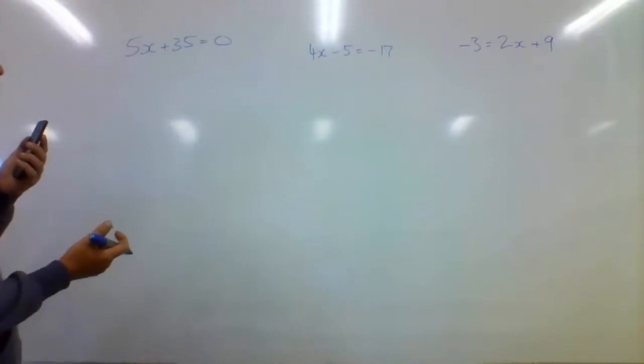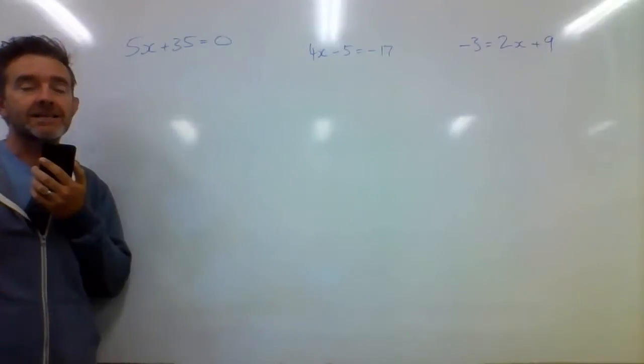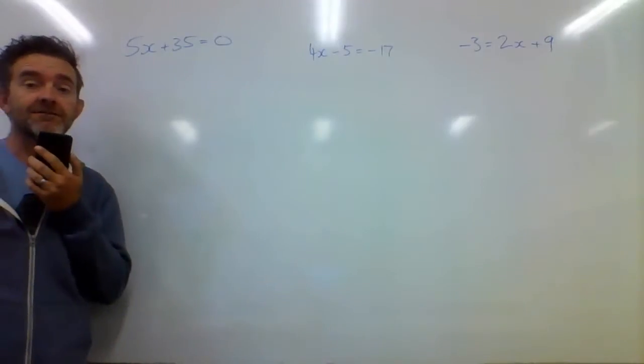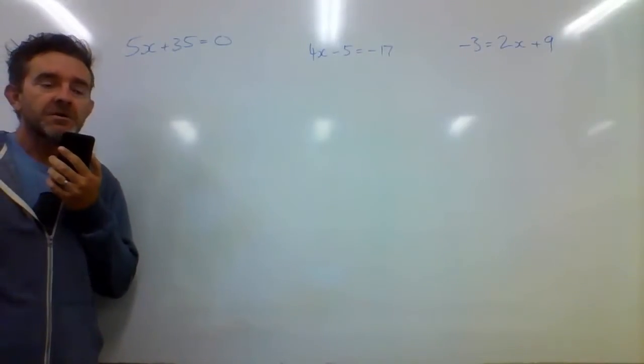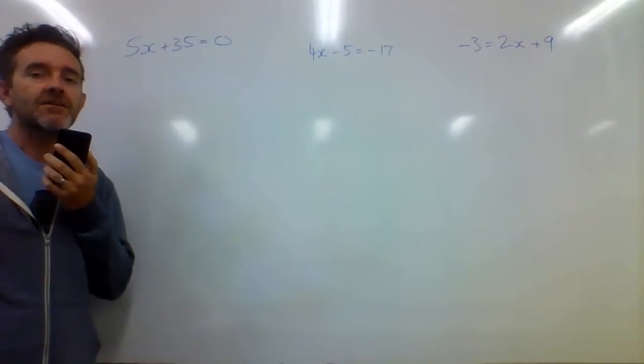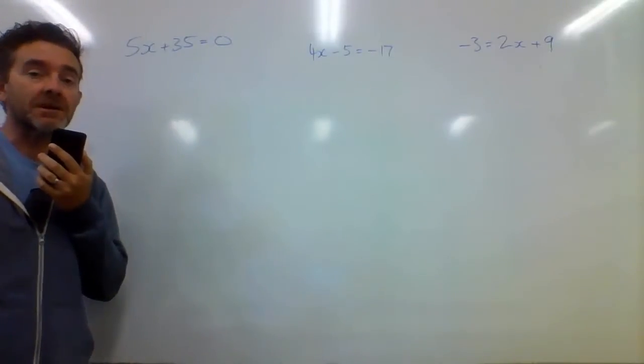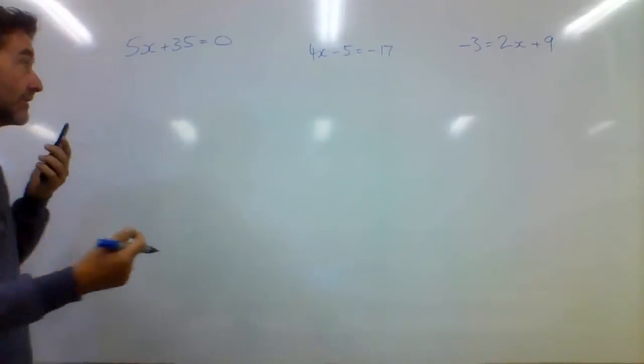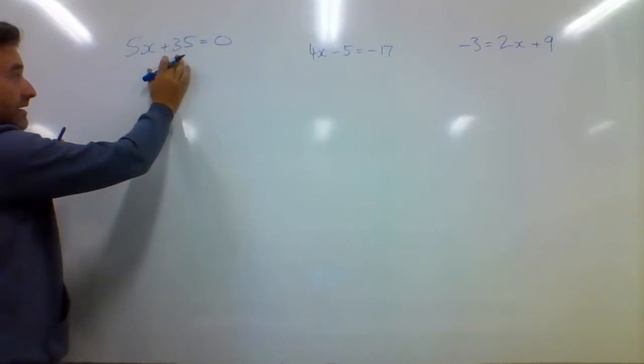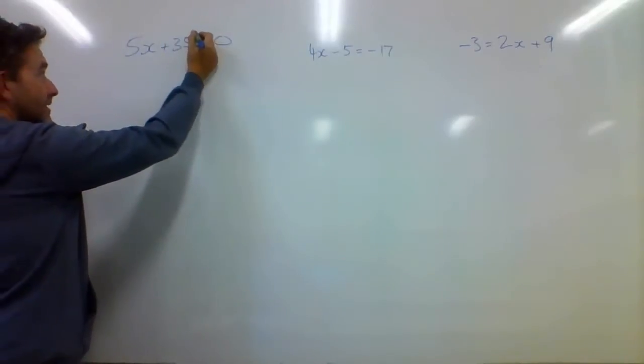So if I want to get x here by itself, I need to get rid of that 35 and I need to get rid of that 5. Now the 5 is being multiplied by it and then the 35 is being added on afterwards. So we work backwards and we get rid of the 35 first. So if we're adding 35 on this side, we need to get rid of it by taking away 35.